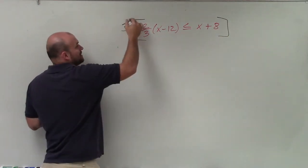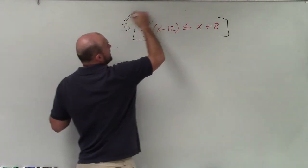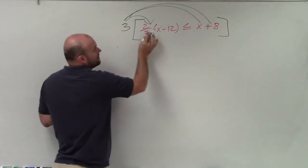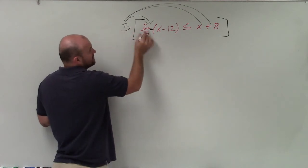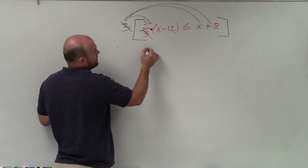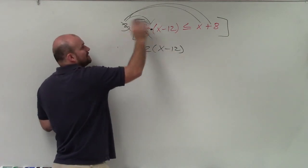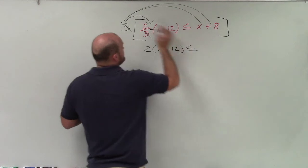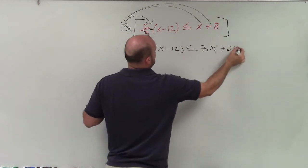So when I multiply by 3, notice that this is a product. So when I multiply, I'm just going to multiply this whole product. But I need to multiply both of these terms, since these terms are separated by addition. These are only separated by multiplication, so I can separate them on that. So 3 times 2 thirds, the 3's divide out. So I'm left with 2 times x minus 12. I do not multiply the 3 inside this parentheses. And that's less than or equal to 3 times x is 3x. 3 times 8 is a positive 24.